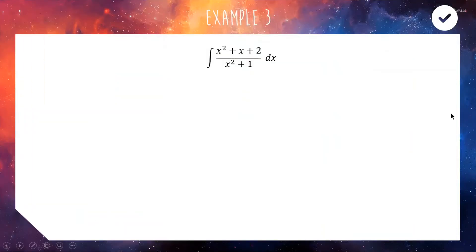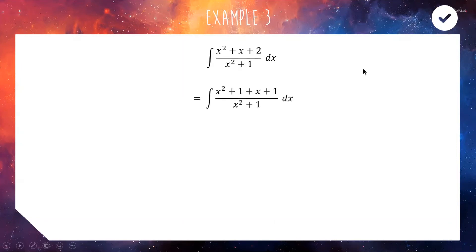For the next example both the top and the bottom are polynomials of the same degree, which changes things slightly, but our approach is similar — we try to find a clever way of splitting the fraction. We write the +2 in the numerator as +1+1 so we have x²+1 on top and bottom. That's convenient because splitting apart gives us (x²+1)/(x²+1), which equals 1.